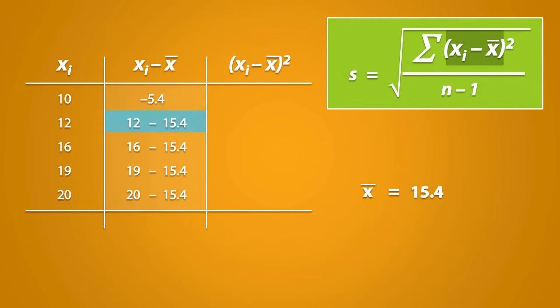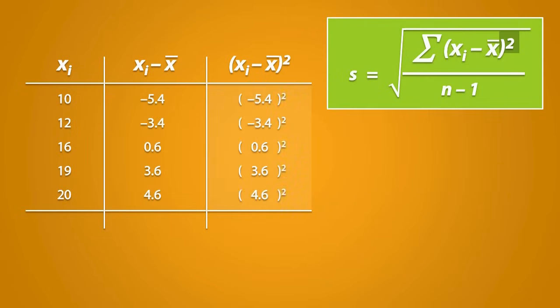10 minus 15.4 is negative 5.4. 12 minus 15.4 is negative 3.4. 16 minus 15.4 is 0.6, and so on. The next step is to square what we have just calculated.